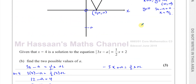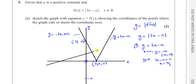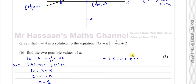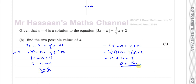Then we take the negative argument: −3x + a = ½x + 2. The line y = ½x + 2 has a gradient of ½, crossing the y-axis at 2 and the x-axis at −4. It will cut the V-shape at two places. Substituting x = 4 into the negative argument: −3(4) + a = ½(4) + 2, so −12 + a = 4, giving a = 16. So the two possible values are a = 8 and a = 16.